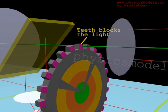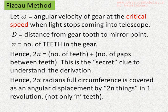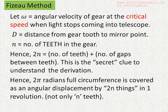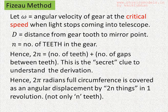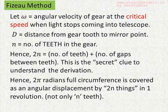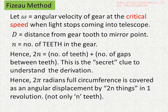Initially, when the speed is low, we will see a flickering light. And as the speed is increased for the gear, we will just see a speed where the light stops. Let omega be the angular velocity of the gear at the increased speed when light just stops coming into the telescope and we don't see the light. And let n be equal to the number of teeth in the gear. The critical thing here is, if there are n teeth, there are also n gaps.